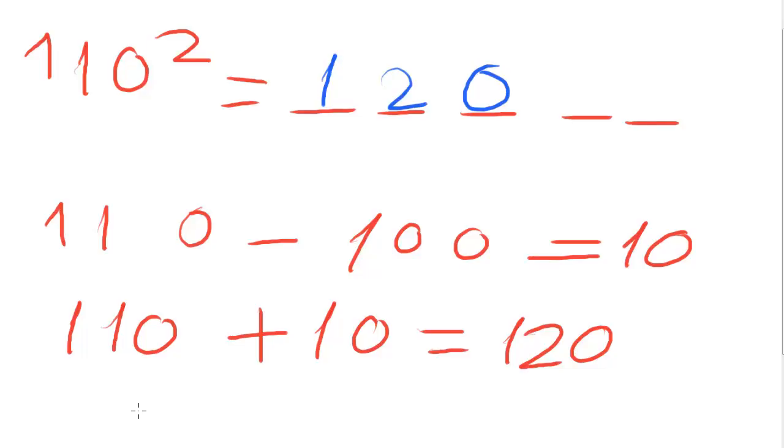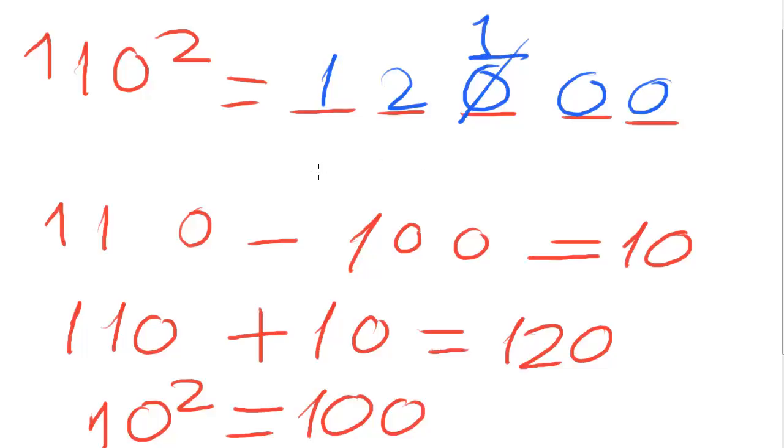The last two digits: calculate ten square, which is one hundred. Complete the last two digits, but make the addition between one hundred and zero. And the final result is this.